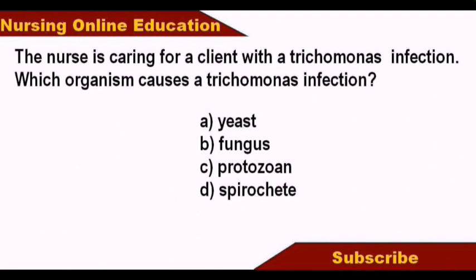The nurse is caring for a client with trichomonas infection. Which organism causes this infection? Options: yeast, fungus, protozoa, spirochete. The answer is protozoa — Trichomonas vaginalis.